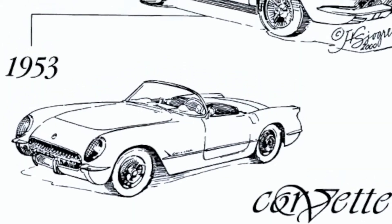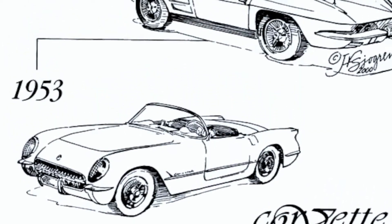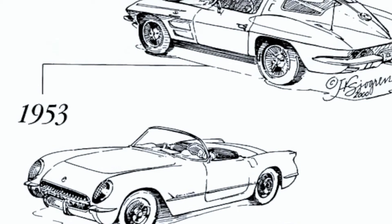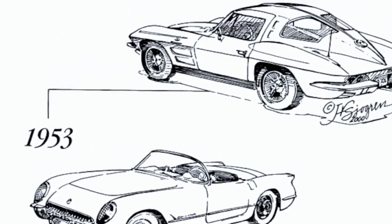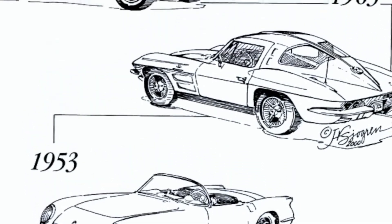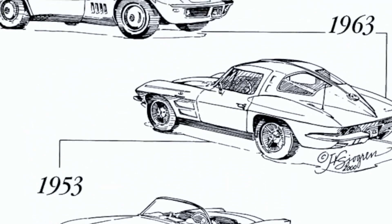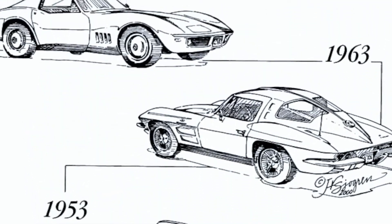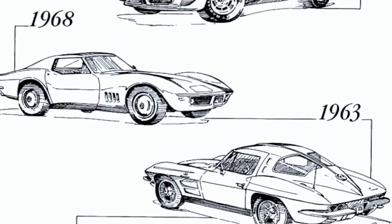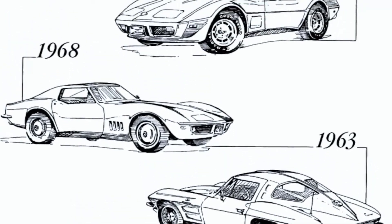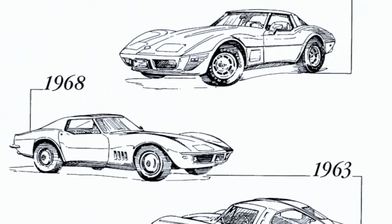He argued that by comparing the similarities in these automobiles, it's possible to know, beyond a reasonable doubt, that this is descent with modification. The problem with that is that everybody knows Corvette automobiles were designed by engineers.